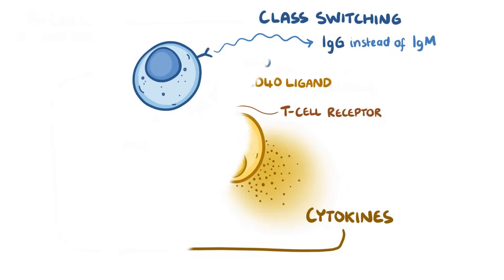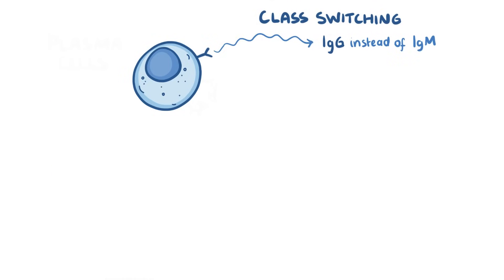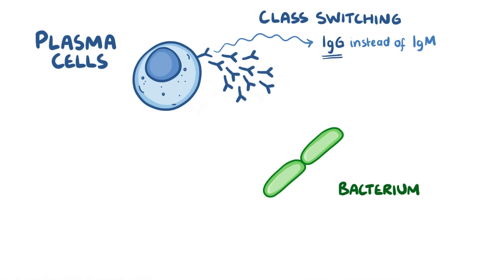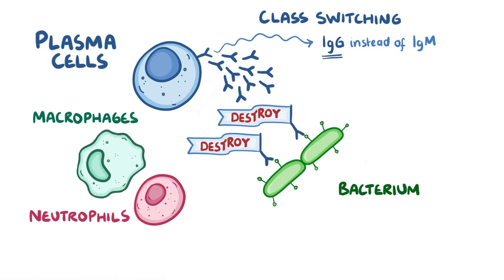After class switching, B cells become plasma cells, and they focus on producing large numbers of this IgG antibody. If this situation was an immune response to a pathogen like a bacterium, the IgG antibodies would bind to the antigen on the bacterium and mark it for destruction by macrophages and neutrophils.